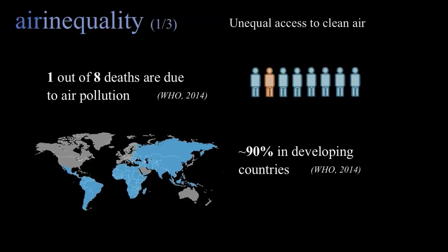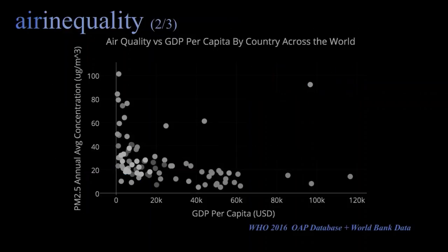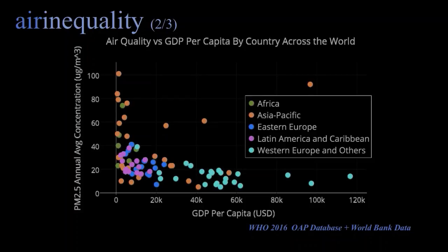A more granular way to look at this is with this graph. The y-axis shows air pollution — smoke and dust — annual PM2.5 concentrations over the course of a year for given countries, where each dot is a country. The x-axis is GDP per capita. You can see a clear trend that lower GDP per capitas correspond to higher PM2.5 values. If you bin these up by region, you see a tendency for countries in Asia and Africa to have higher pollution.